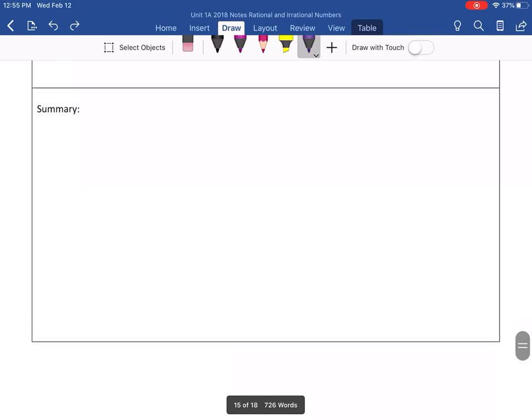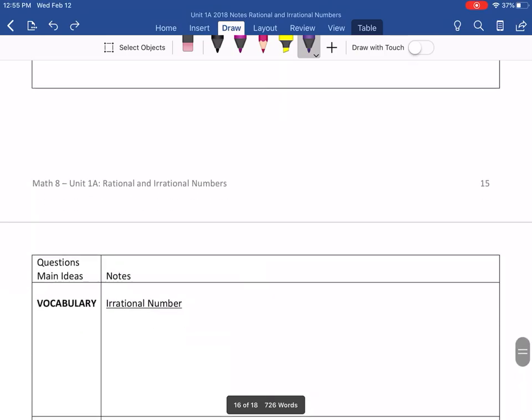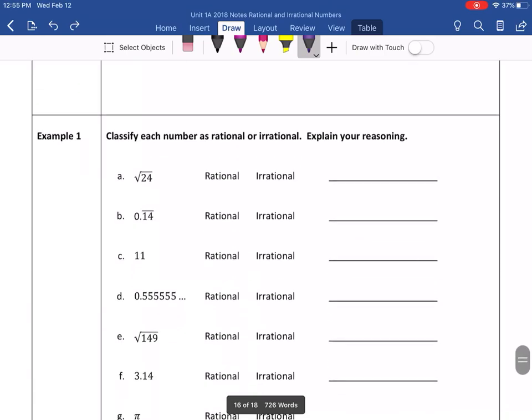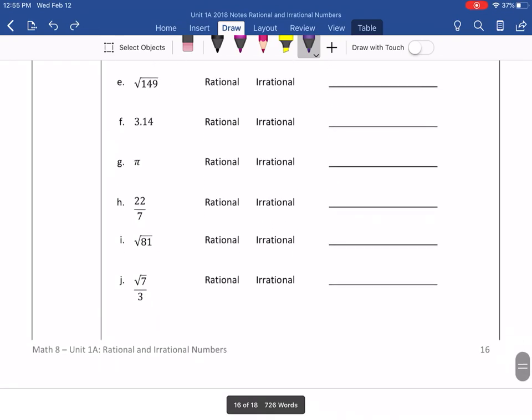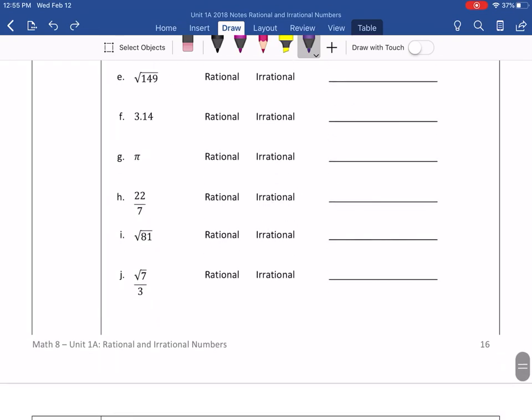In your notes, this page is page 15. We're going to be doing page 16 together today for day one, classifying whether those examples are rational or irrational.